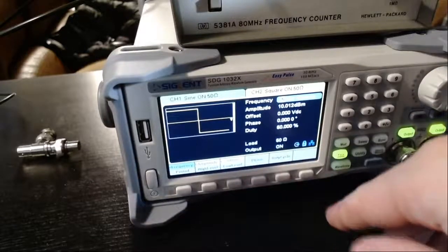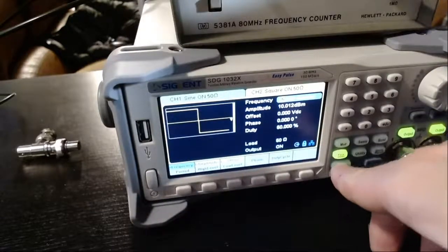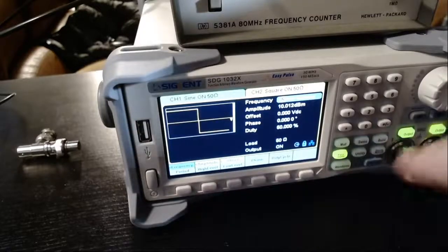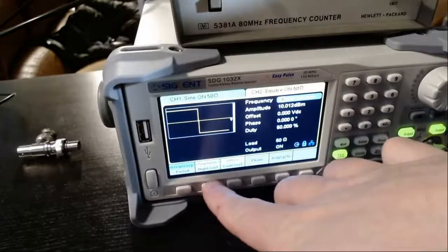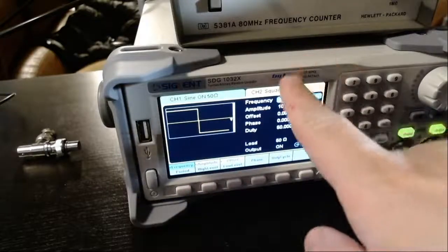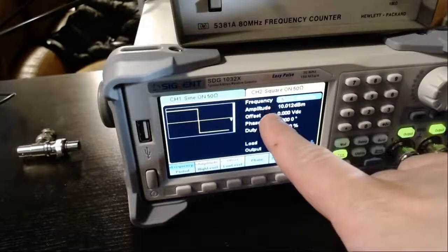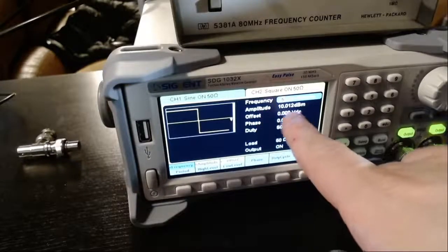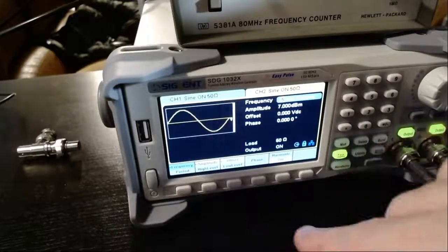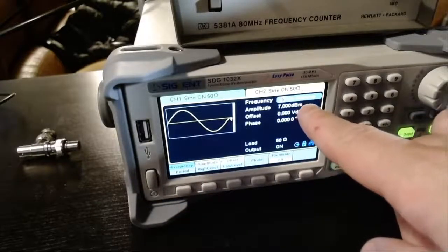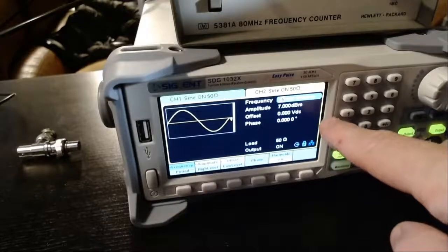At the moment my signal generator, channel one, is set at 25 megahertz with an amplitude of—no sorry, this is channel two—25 megahertz. It's a square wave, let me convert it to a sine wave with an amplitude of 7 dBm. So 25 megahertz at 7 dBm.